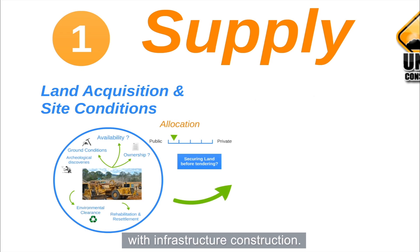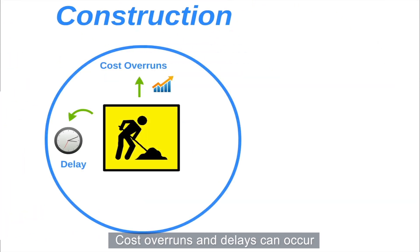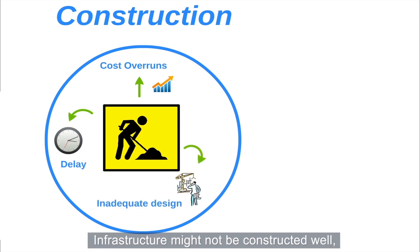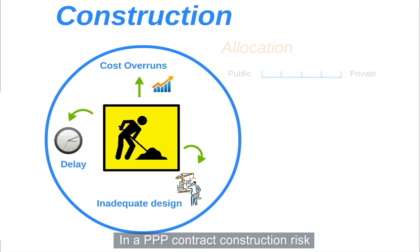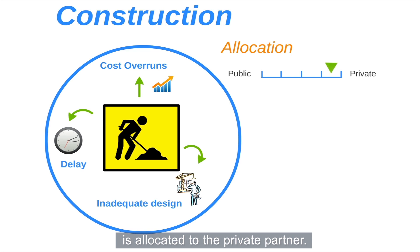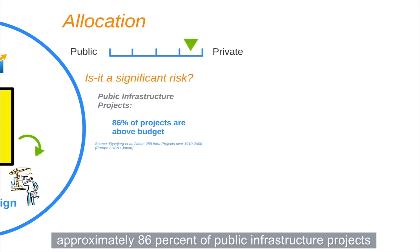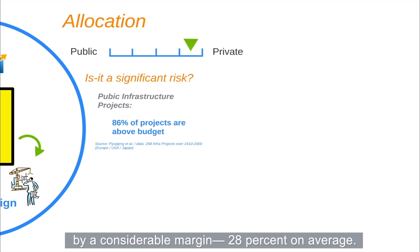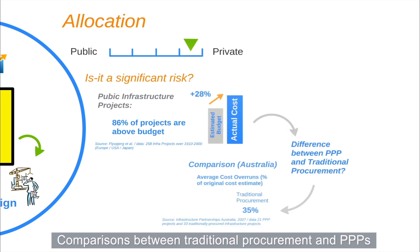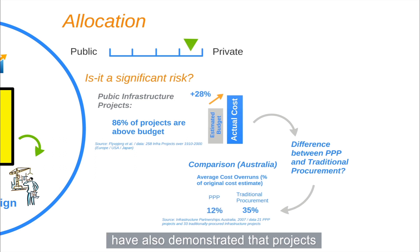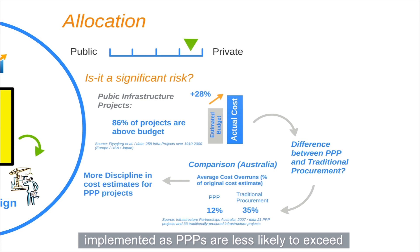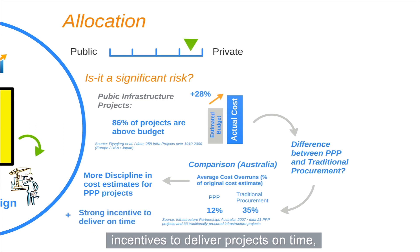Another type of risk is associated with infrastructure construction. Cost overruns and delays can occur during the construction phase, and infrastructure might not be constructed well or might not deliver the service required. In a PPP contract, construction risk is allocated to private partners. Studies based on a large pool of cross-country infrastructure projects have shown that approximately 86% of public infrastructure projects exceed their initial budgets by a considerable margin — 28% on average. Comparisons have also demonstrated that PPP projects are less likely to exceed their initial budget than those following traditional procurement, and PPPs present stronger incentives to deliver projects on time, as the private sector is not remunerated until construction is complete.